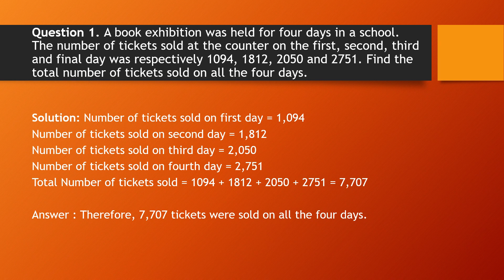Write the solution: Number of tickets sold on the first day = 1094, on the second day = 1812, on the third day = 2050, and on the fourth day = 2751.